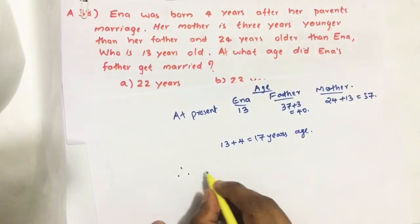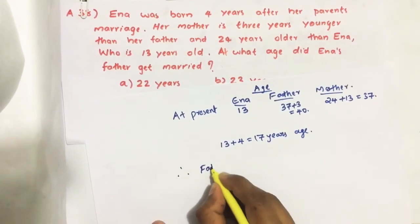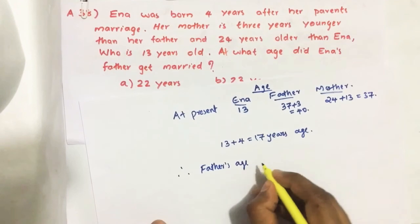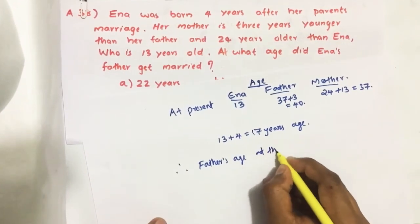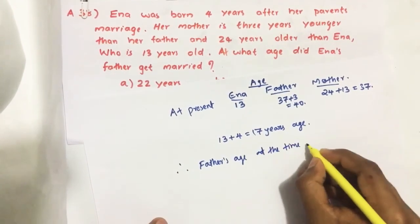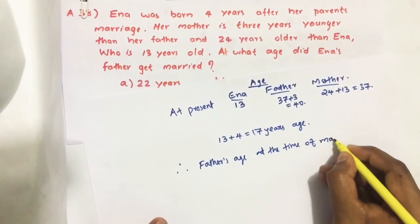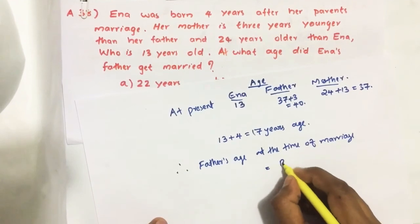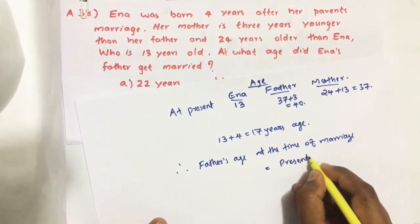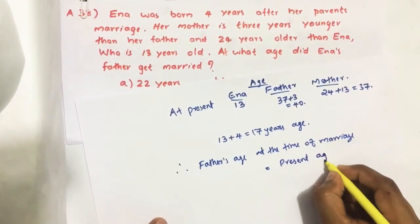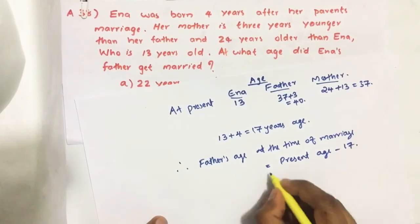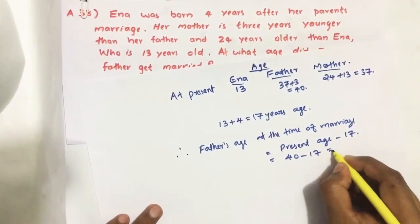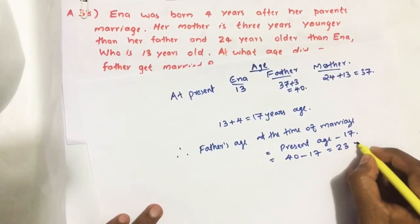Therefore, father's age at the time of marriage is equal to present age minus 17. That is 40 minus 17. We get 23 years.